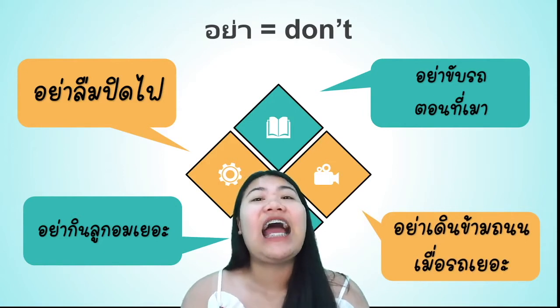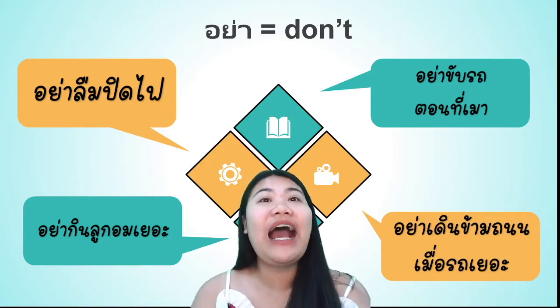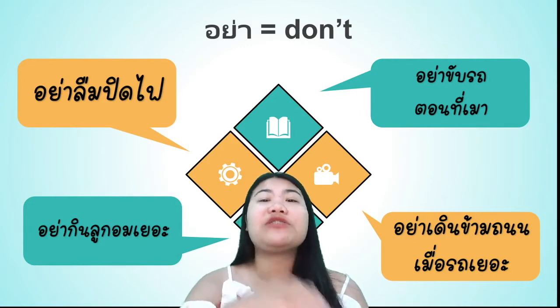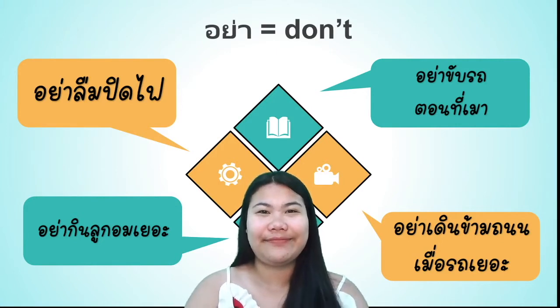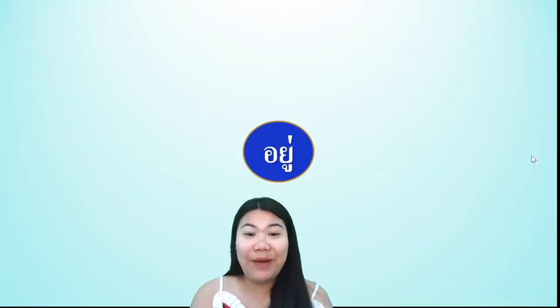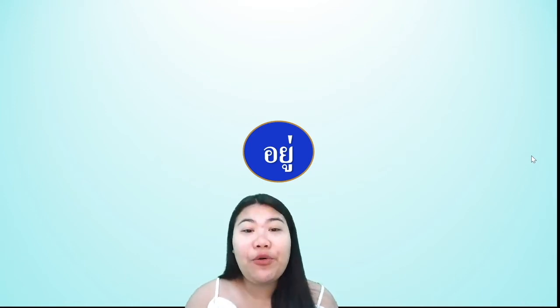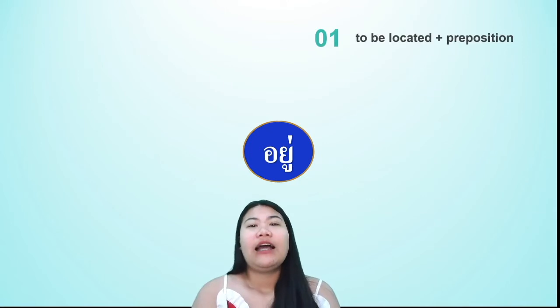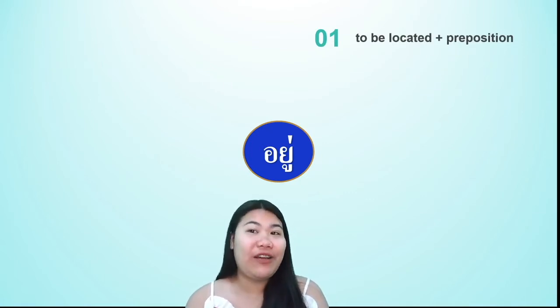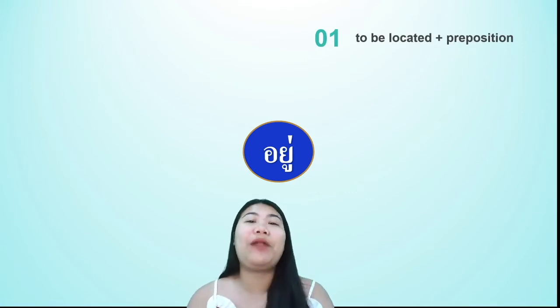อย่าเดินข้างถนนเมื่อรถเยอะ — don't walk on the side of the road when there are a lot of cars. Next, the word อยู่, which means 'to be located.' Let's see the example: อยู่ to be located, plus preposition.